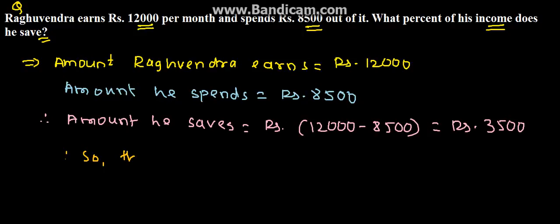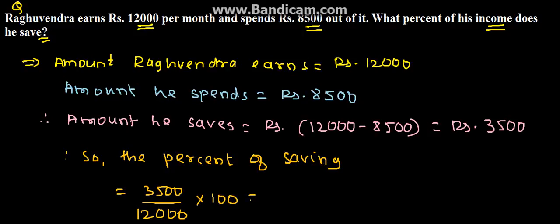Now we need to derive what percent. So the percent of saving is equal to 3,500, which is what he saves, from 12,000, which is his total earning, and we multiply by 100 to find the percent.